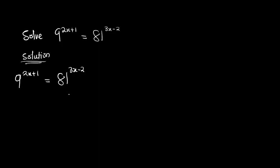We want to find a common base. The bigger number is 81, so we reduce that into 9 raised to the power something. It so happens that 9 raised to the power 2 will give us 81, which is 9 times 9 or 9 squared. So in place of 81, we put 9 squared. This makes the equation 9 raised to the power 2x plus 1 is equal to 9 squared raised to the power 3x minus 2.